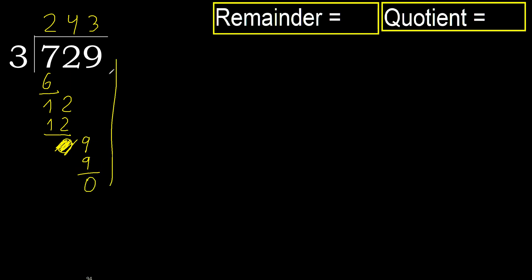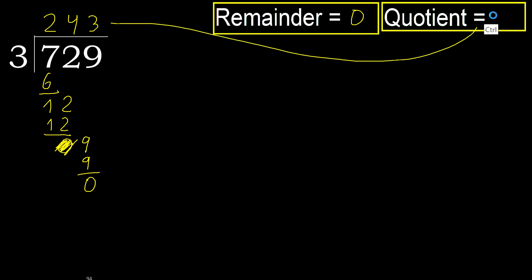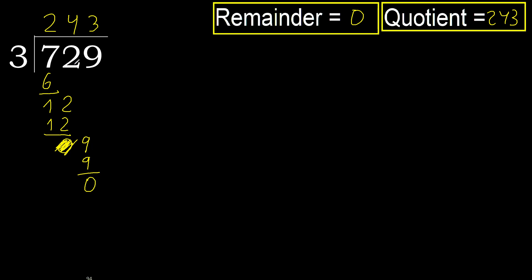Next, there is no number, therefore finish it. 0. Therefore, 729 divided by 3 is done — the answer is here.